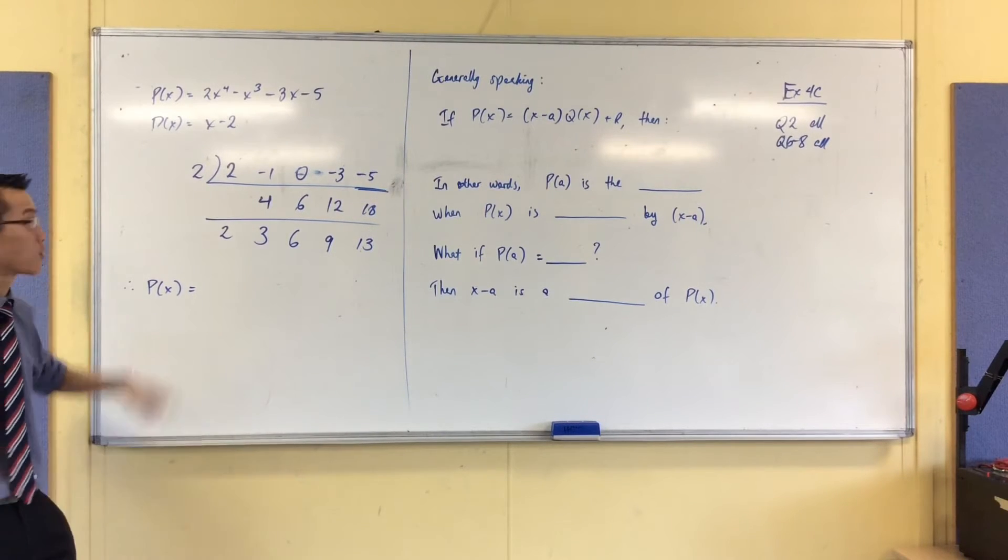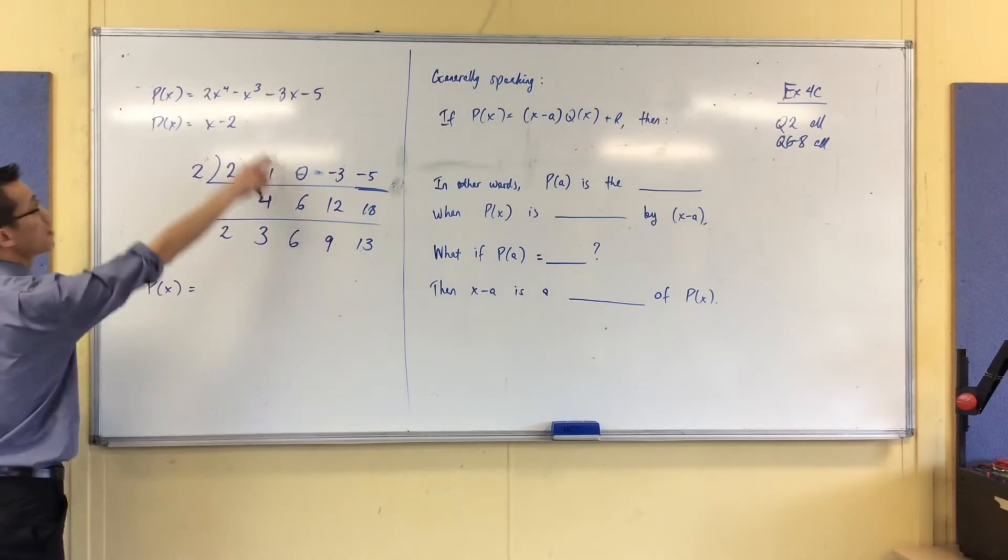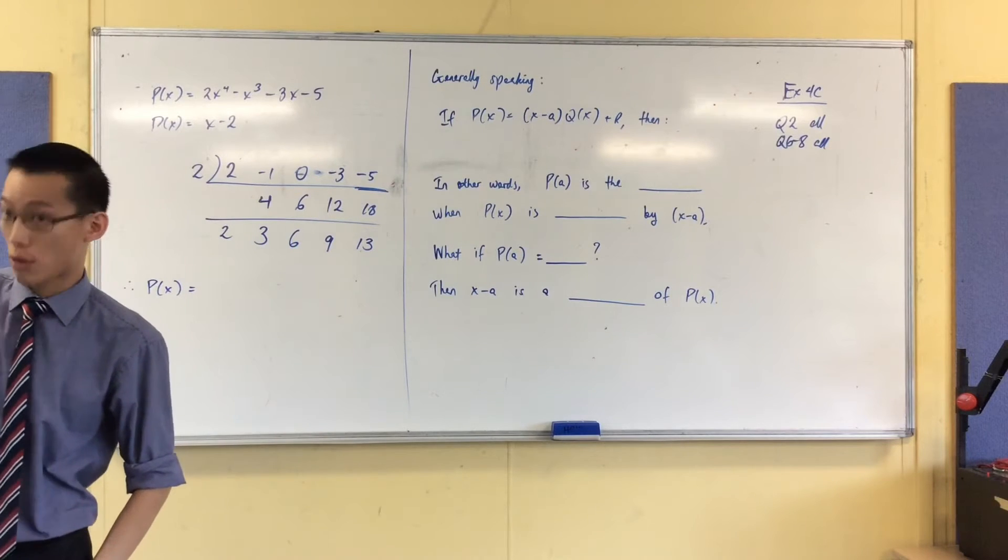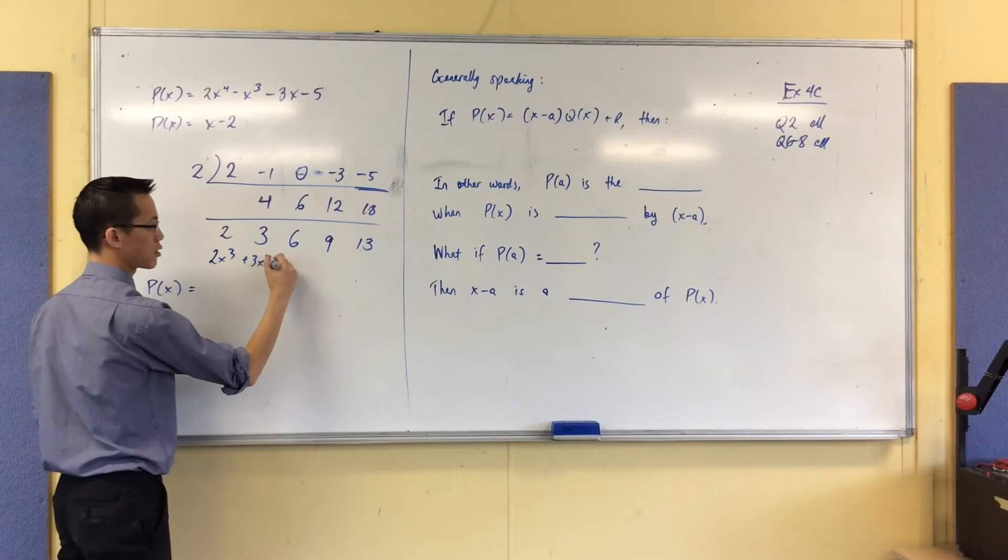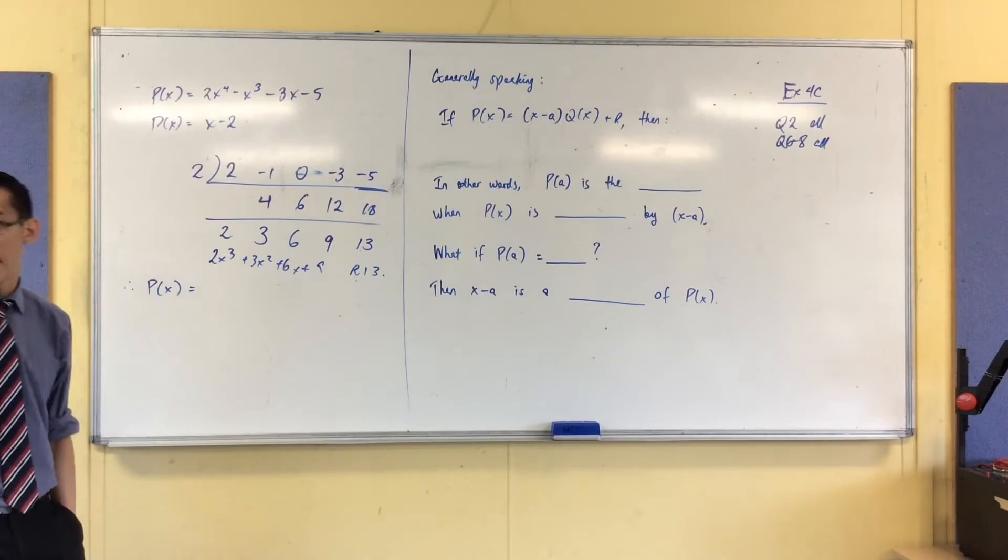So there's the coefficients of what I need. I was dividing degree 4 by degree 1, so I should end up with degree 3. So this is 2x³ + 3x² + 6x + 9 with the remainder of 13. And I'm home.